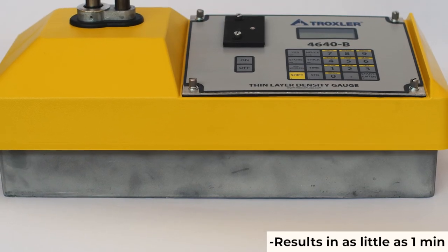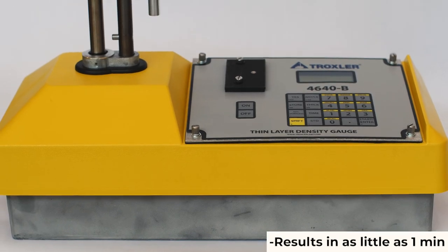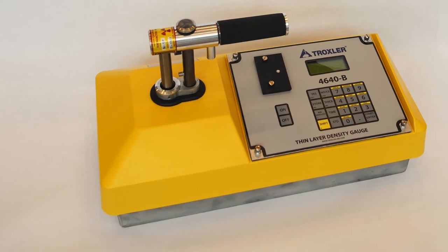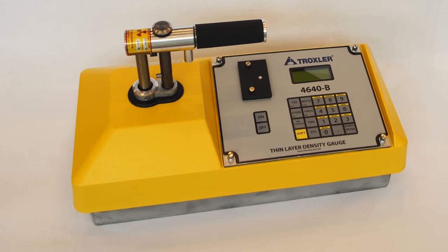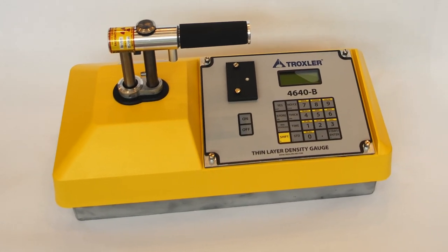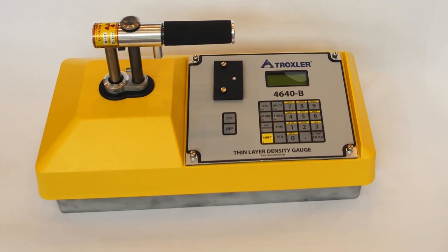the Model 4640B can provide the user with test results when they are needed, not hours after compaction has been completed. The Troxler Model 4640B complies with ASTM D2950 and AASHTO T355.